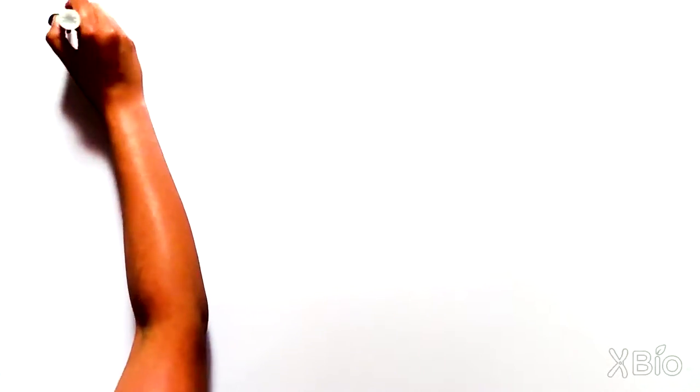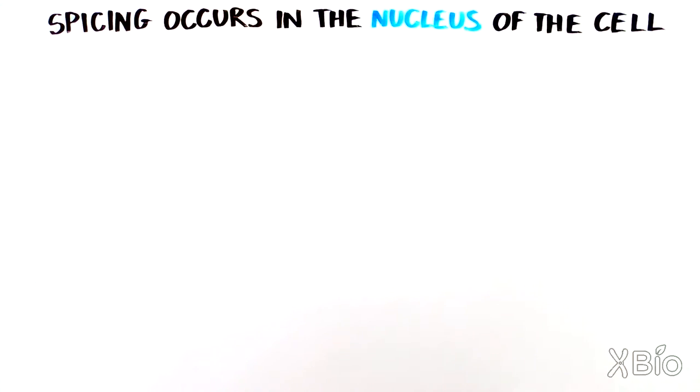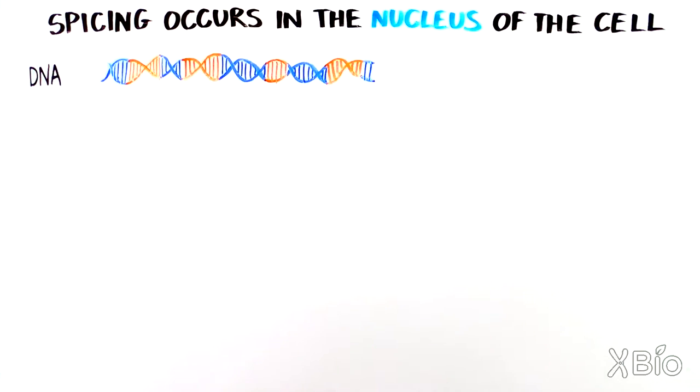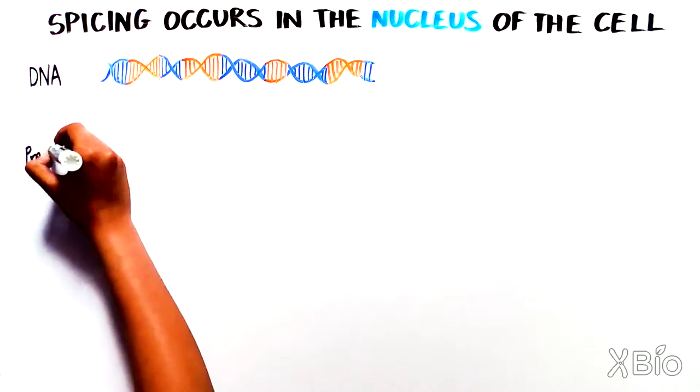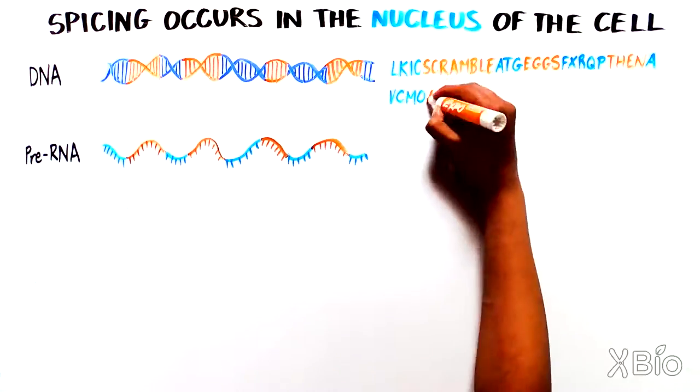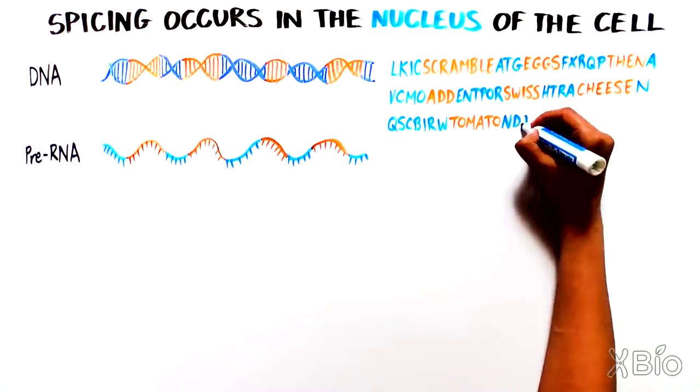To start to learn about the process of splicing, let's dive down into the nucleus of the cell, which houses our DNA. DNA is first transcribed into RNA. This RNA is called a pre-mRNA because it has not yet gone through splicing. It still has the gibberish mixed in with the instructions.